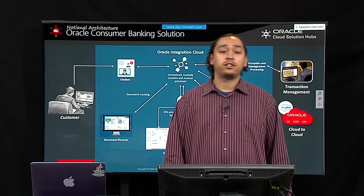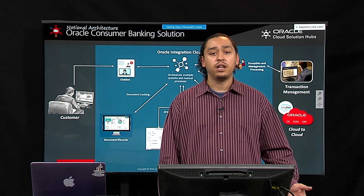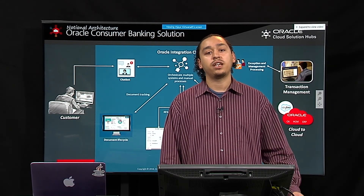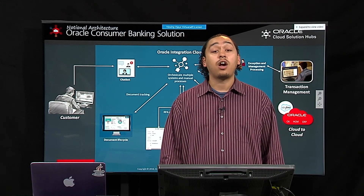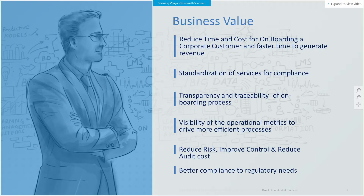Over the course of this project, you saw Vijaya explain how the chatbot collected information from the customer, and then OIC took that information and sent it to our RPA technology, where it was put into the bank's custom CRM system and used to check the legacy system for the James Hartman customer. Justin then covered how we used blockchain technology for the document lifecycle management of James Hartman's credit card application. Ultimately, this means the customer is able to reduce the time and cost of onboarding a new customer.